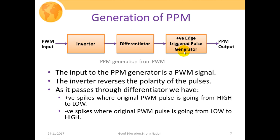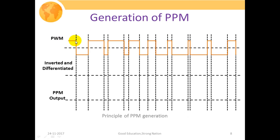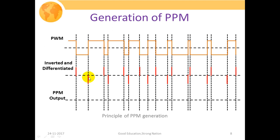The orange waveform shows the PWM waveform. The inverter inverts the negative pulse to a positive one and the positive pulse to a negative one. The second axis shows the combined inverted and differentiated waveform. When we invert and differentiate, the differentiator generates an impulse-type signal at the rising edge of the waveform and again at the falling edge of the pulse, and this keeps repeating.